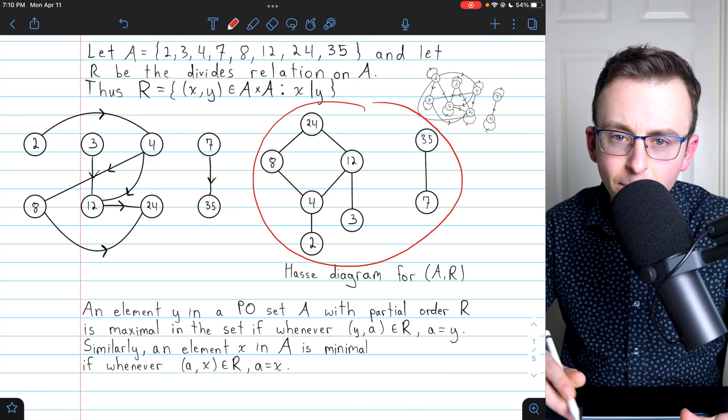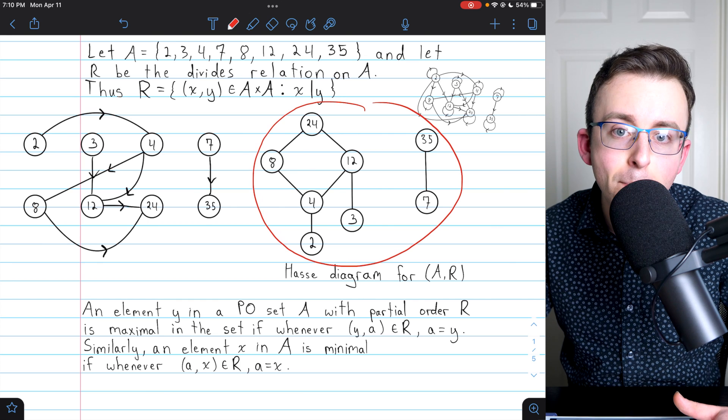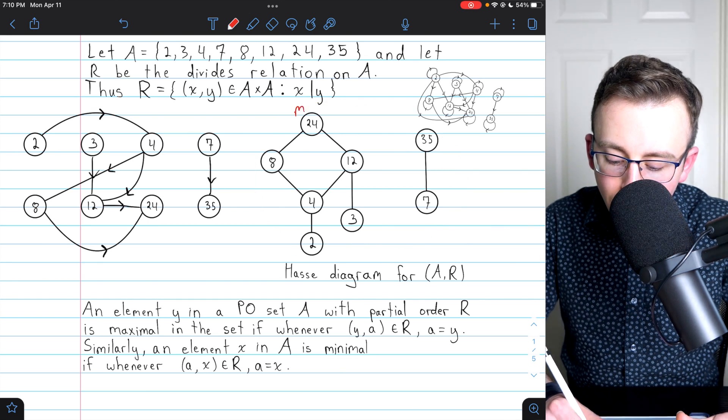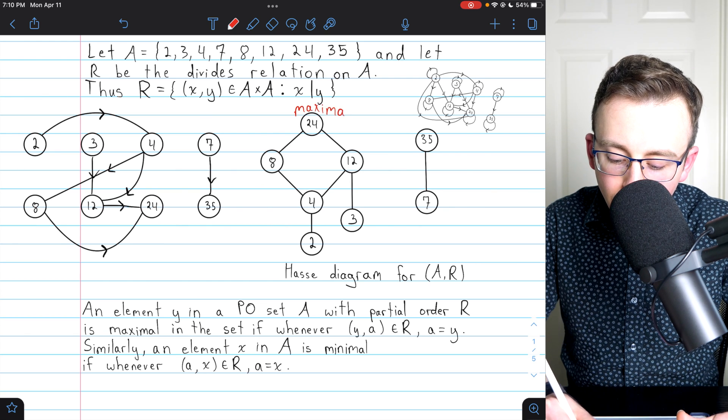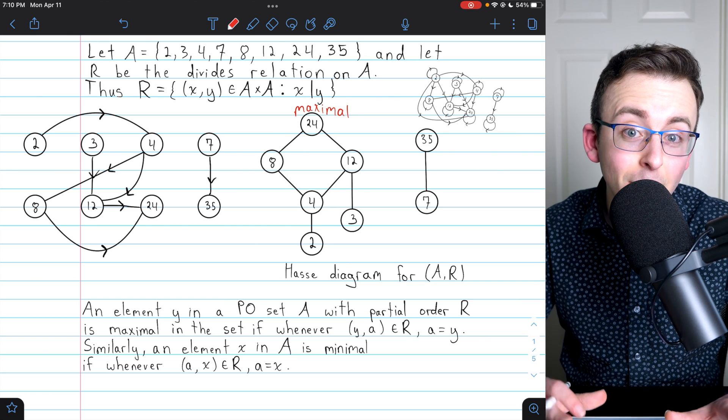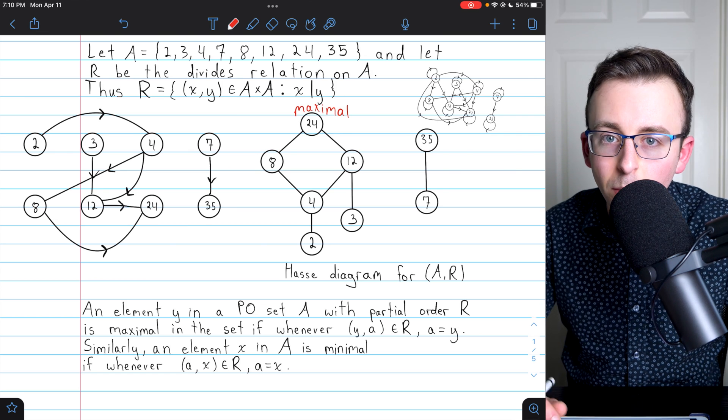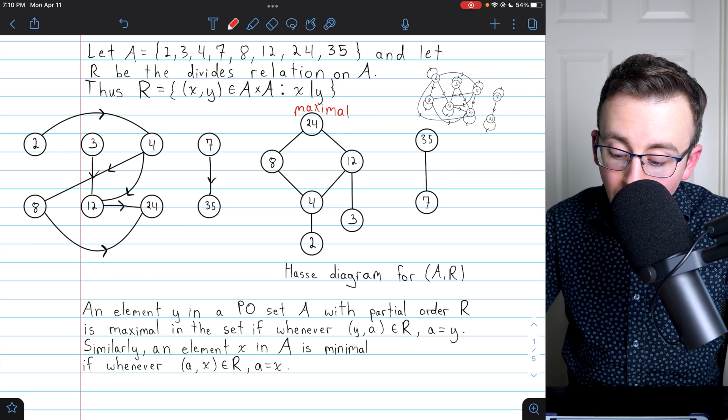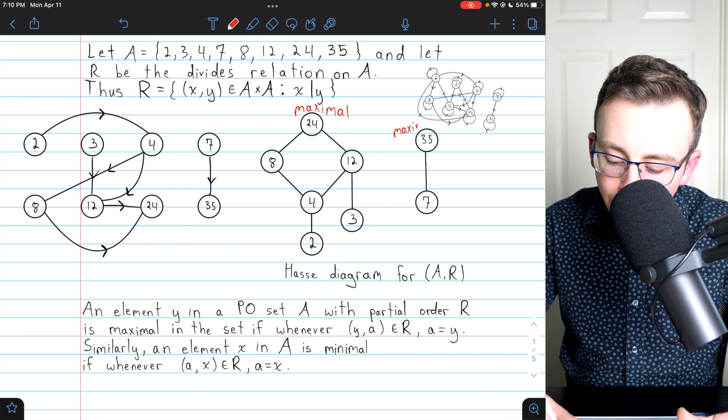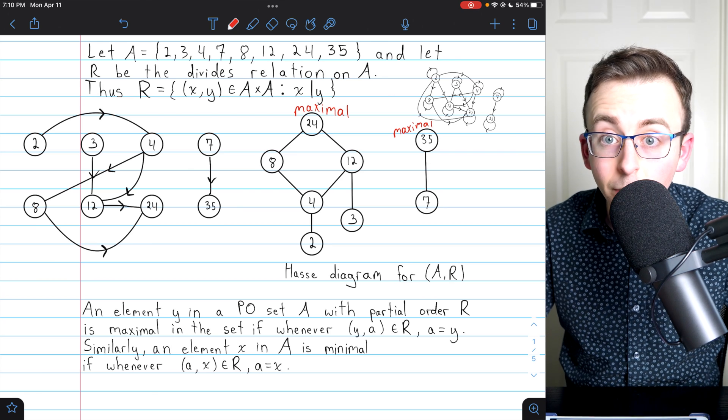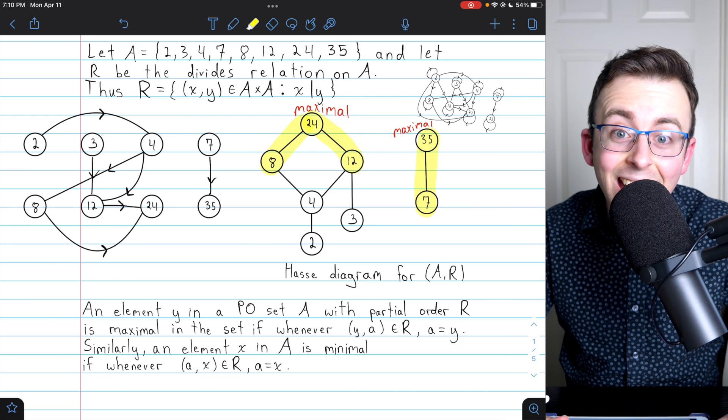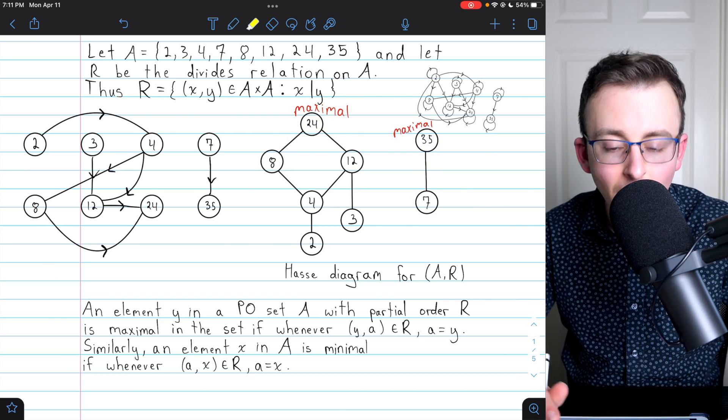Going up to our Hasse diagram, can you see how we would use it to identify maximal and minimal elements? A maximal element would be 24, because 24 relates to no element except itself. Remember, in a Hasse diagram, every element does still relate to itself, even though there's no line to indicate that. Another maximal element would be 35. Again, 35 relates to no element except itself, and so it's maximal. In both cases, we see that things relate to them, but they don't relate to anything except themselves.